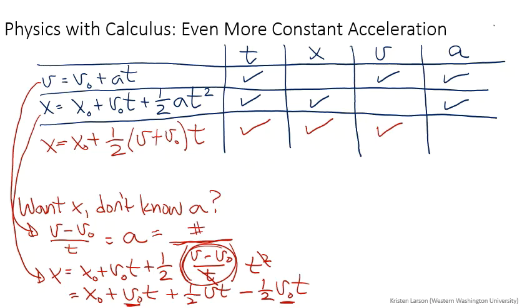So if you stare at this for a while, you realize there has to be one more, and there is one more. And if you stare at this for a while, you realize there must be one that has position and velocity and acceleration, but no time. And there is that equation. What would you do? Well, you'd pick one of these other ones, solve it for time, and then plug it into one of the other ones, any of the other ones, and simplify it, and voila, you'd get the last equation.